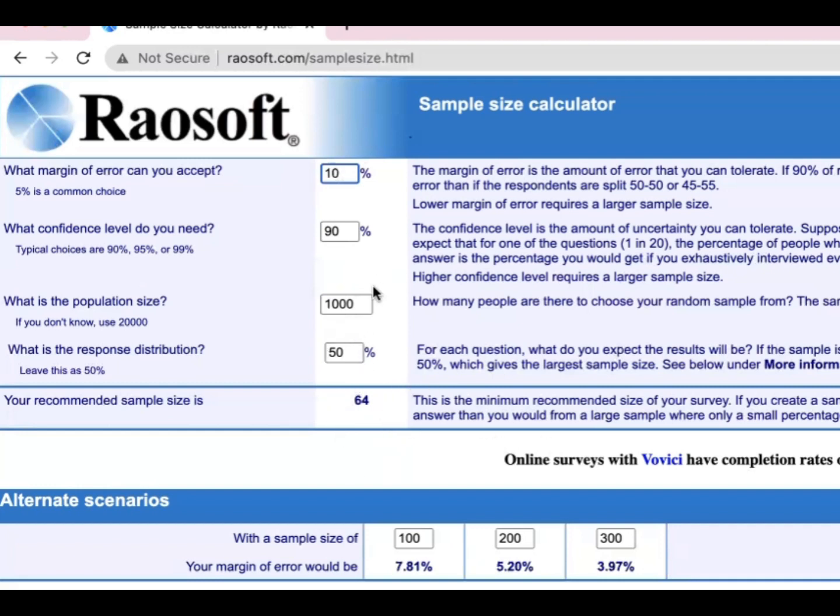It's very safe to use 95% for survey and conducting a descriptive or quantitative research. So 95% confidence level and margin of error of 5%. So you need 278 for a total population of 1,000.